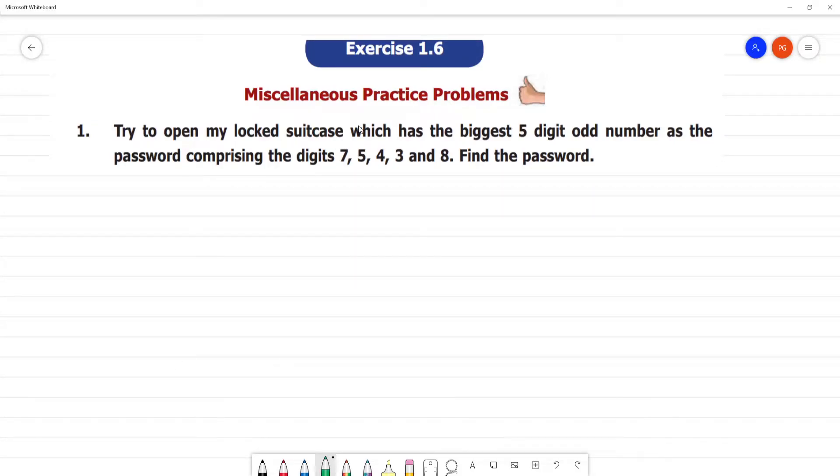Mr. N's practice problem, Exercise 1.6, first question: Try to open my locked suitcase which has the biggest 5-digit number that is an odd number as a password, comprising the digits 7, 5, 4, 3, and 8. So this is a 5-digit number.